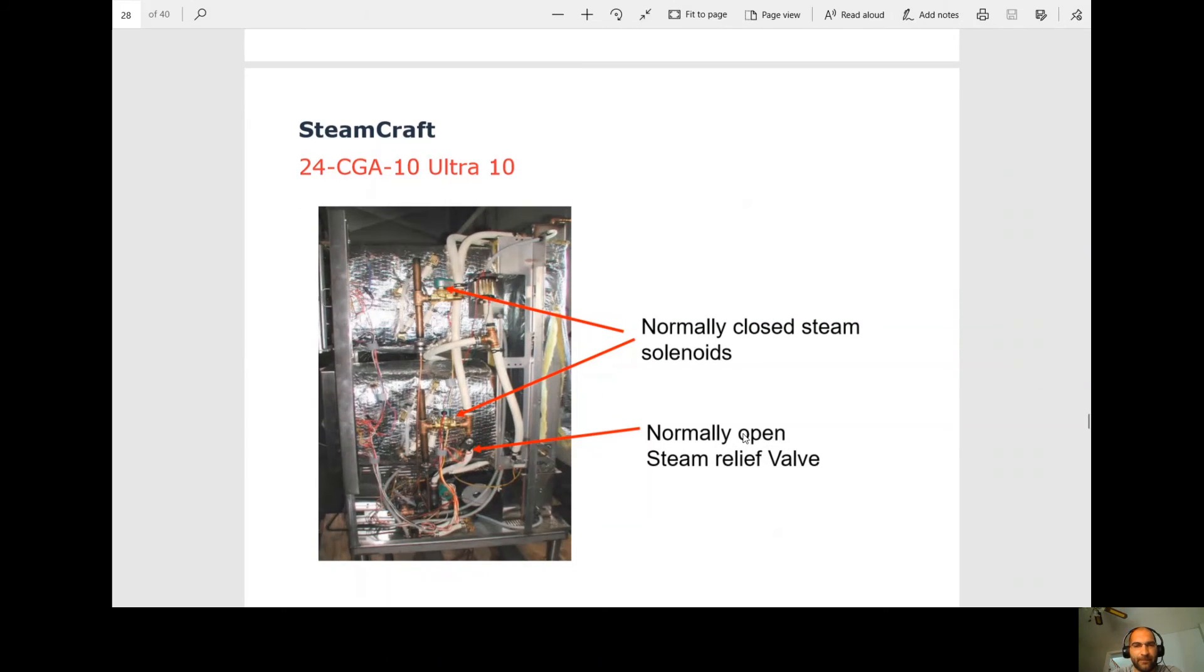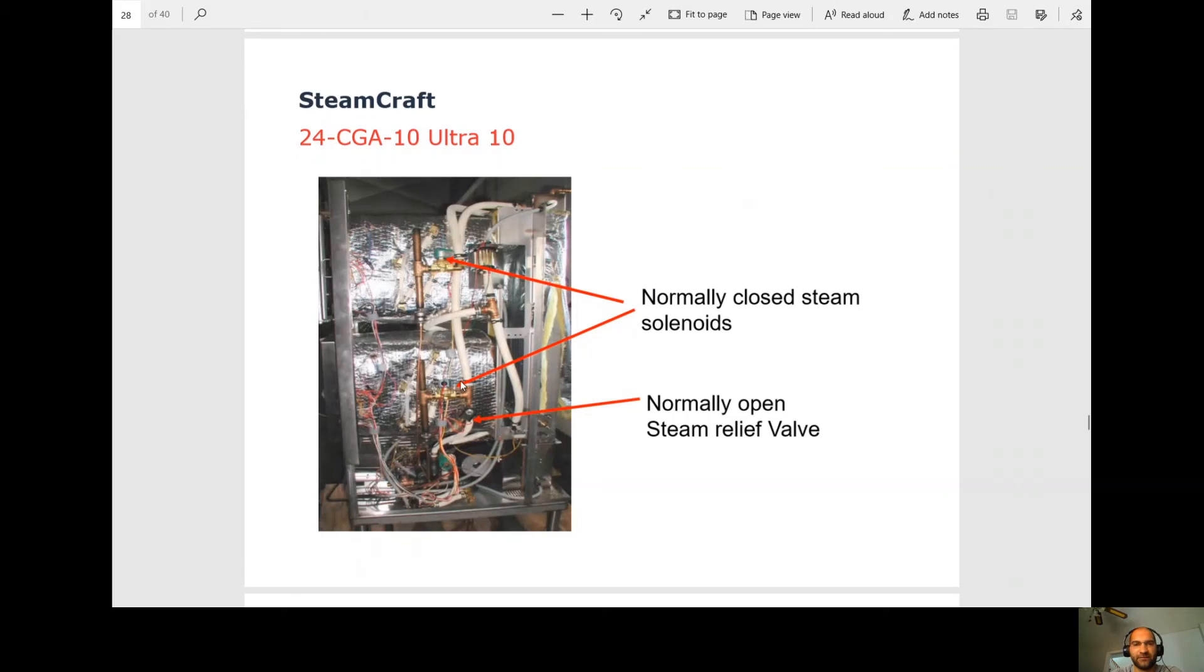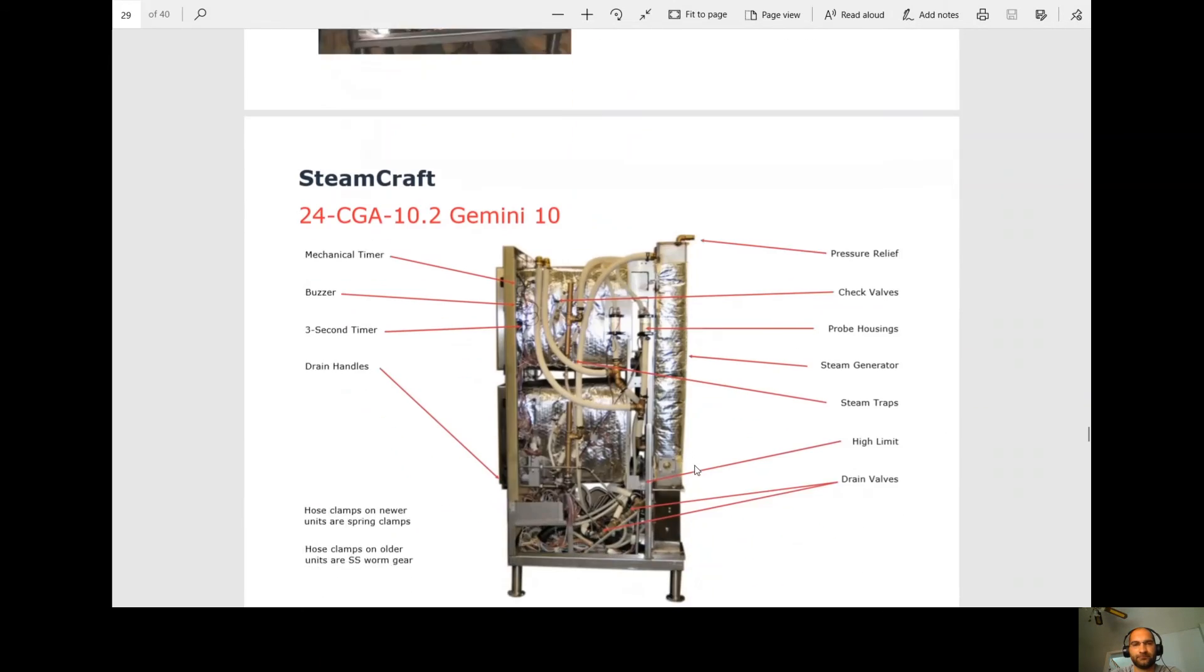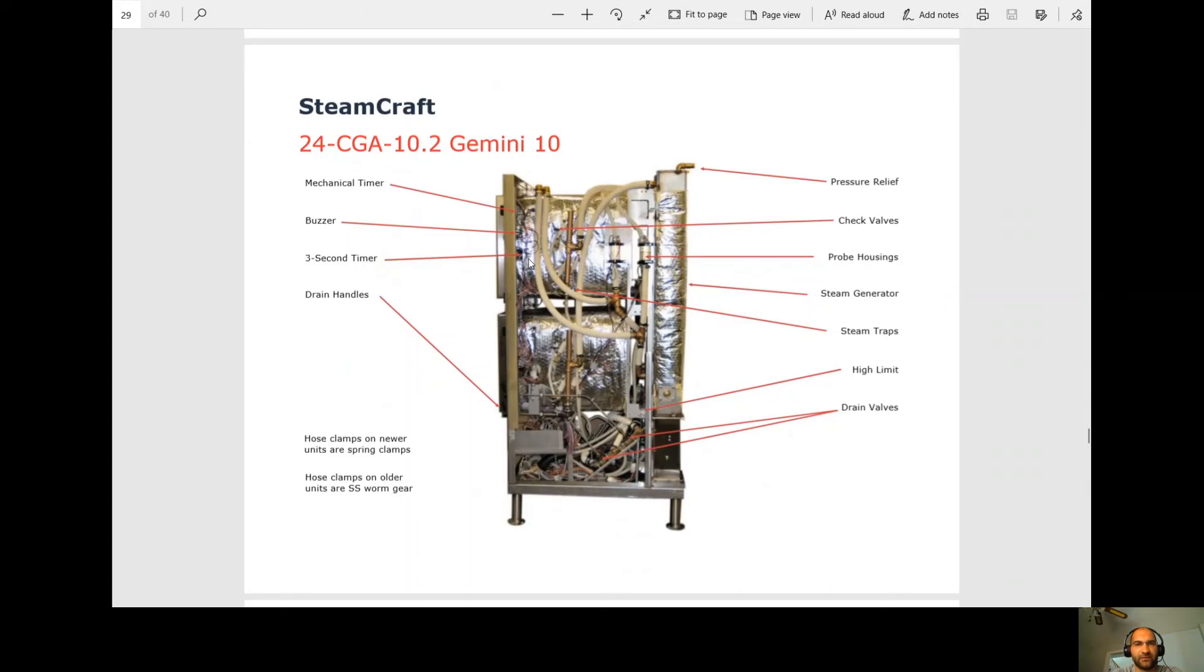So this is the steam craft unit. Just quickly, these are the steam solenoids. That's allowing steam into there. And then these are the relief valves. This is going down at the drain. So that's how we're controlling how much steam can go into the cabinet. We have the mechanical timer at the top, the buzzer, our three second timer. The drain handles. Your drain valves in the back here. Your high limit in the back as well. We have our steam traps. Here's the steam generator or the boiler. Probe housings, the check valves, and then our pressure relief here, which we always need those on a boiler because if we always over pressurize, that thing basically becomes like a bomb. So we want to be able to release the pressure at a certain pressure so we don't build up too high.